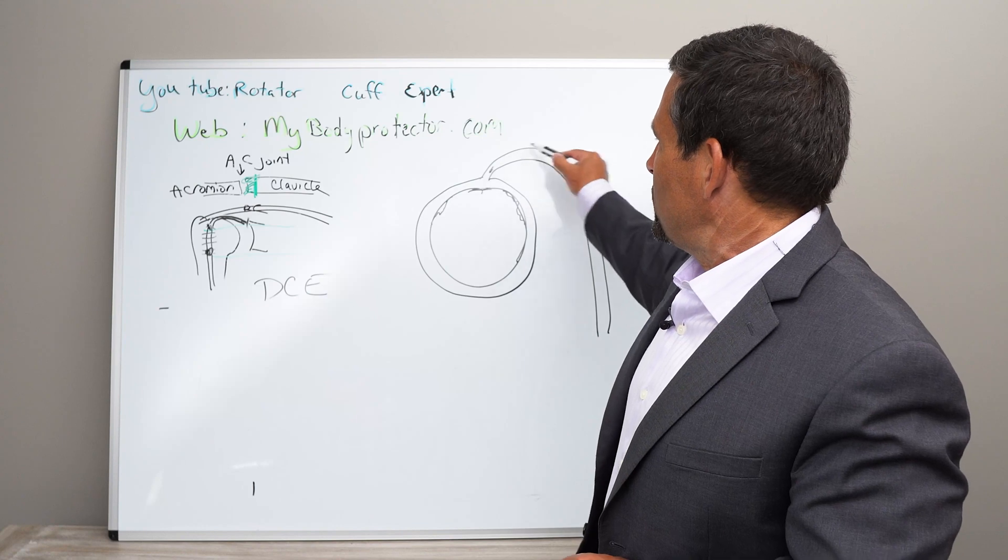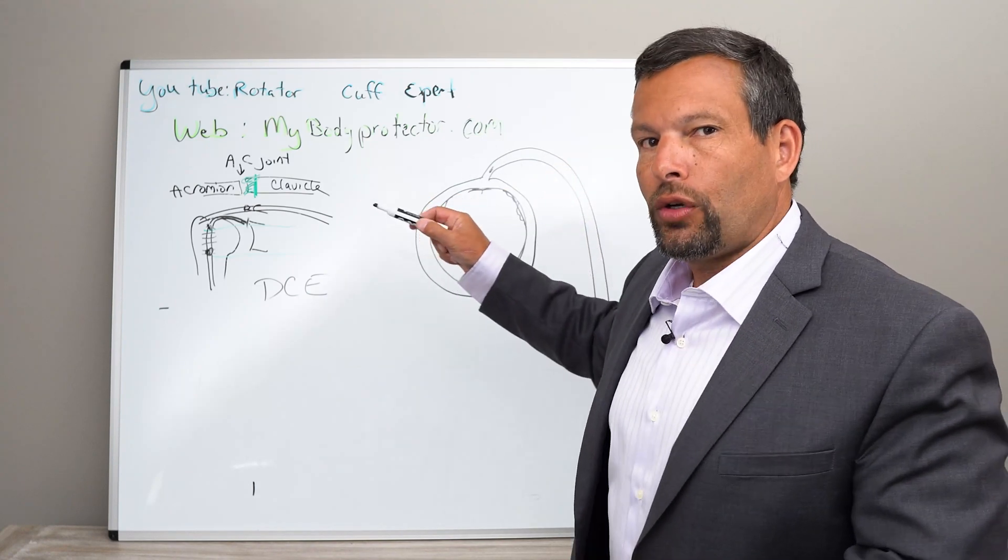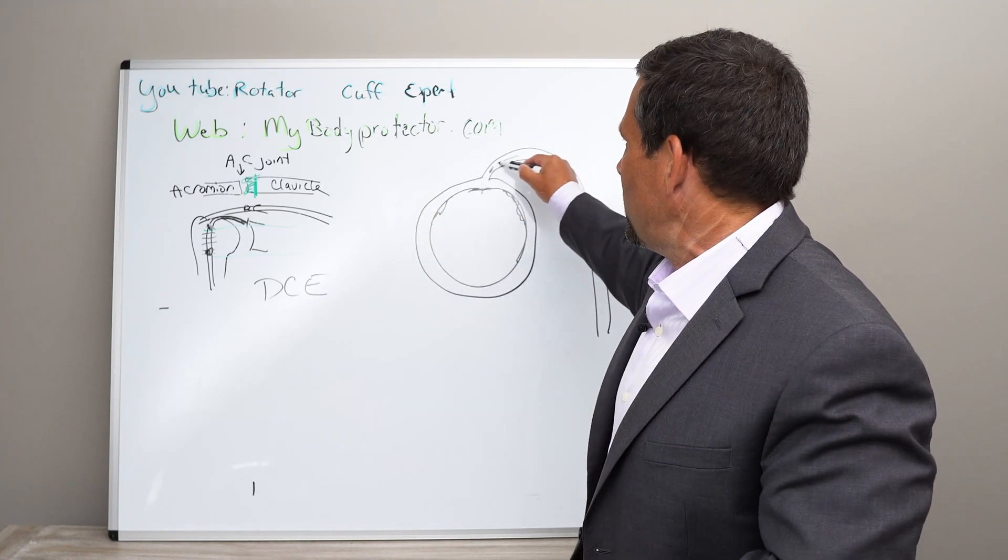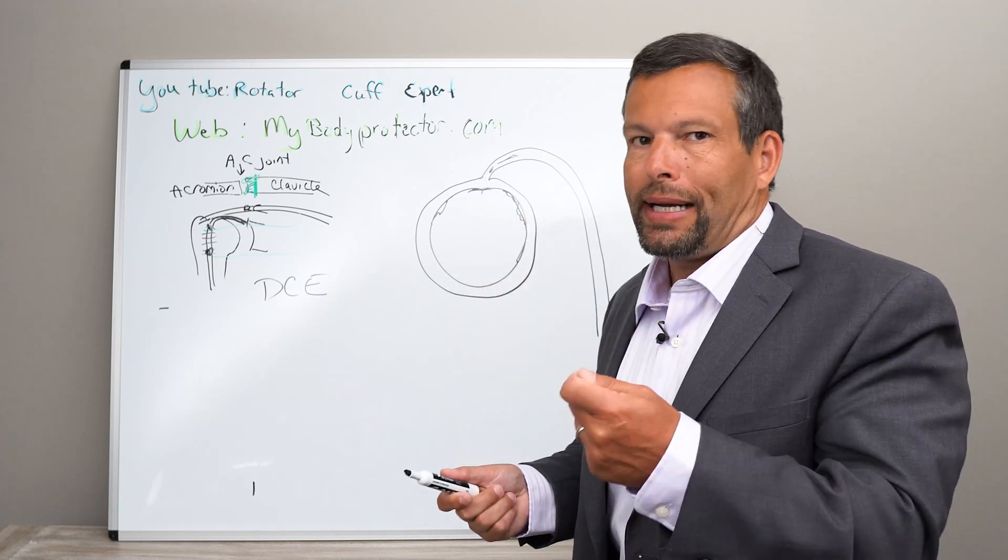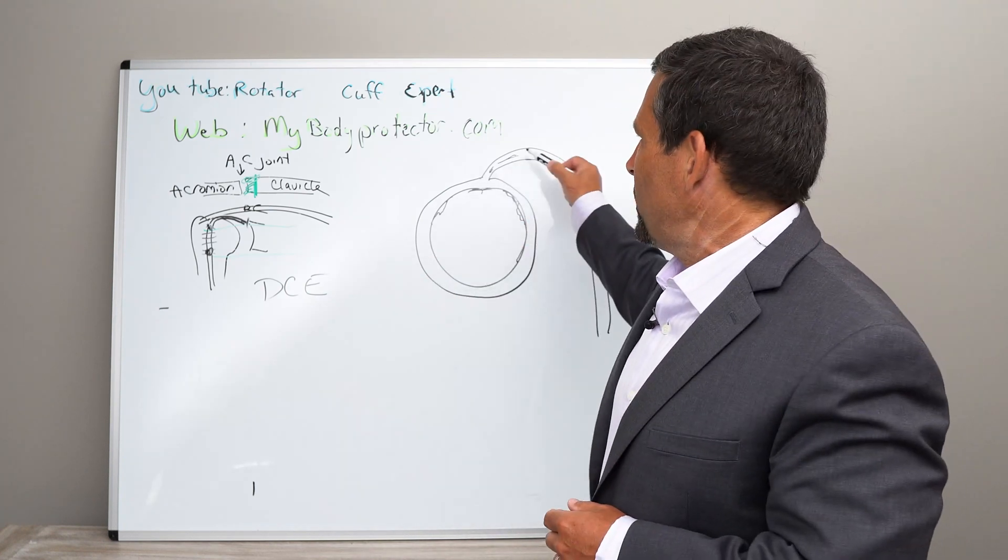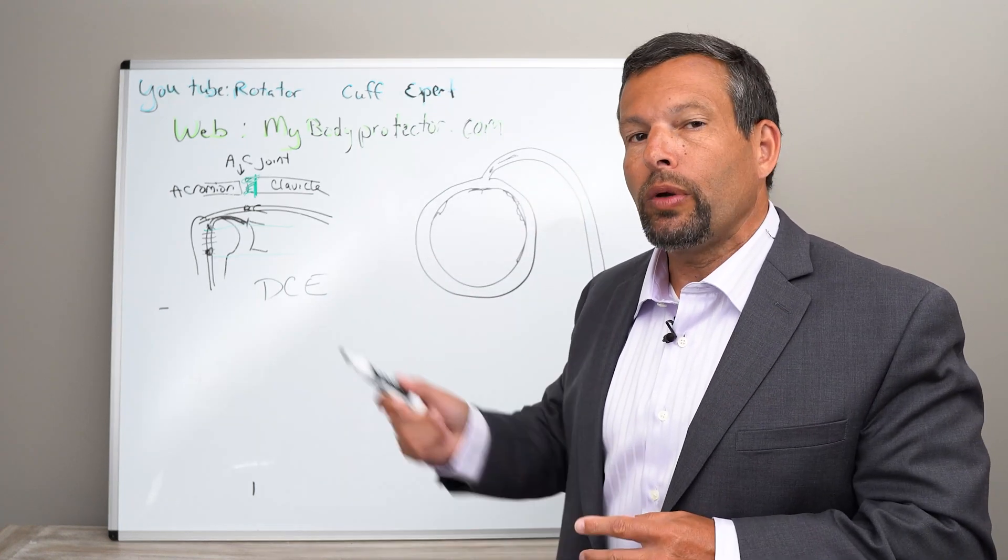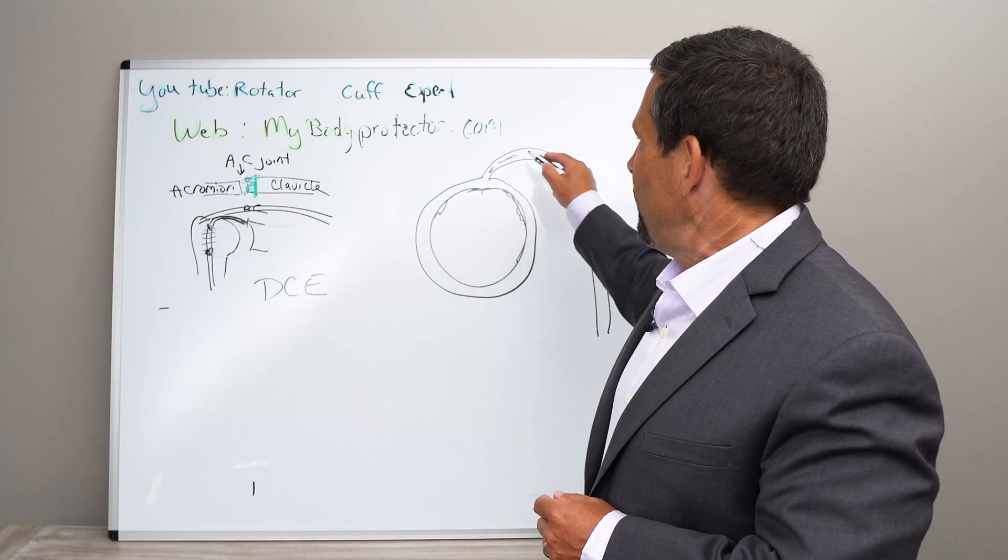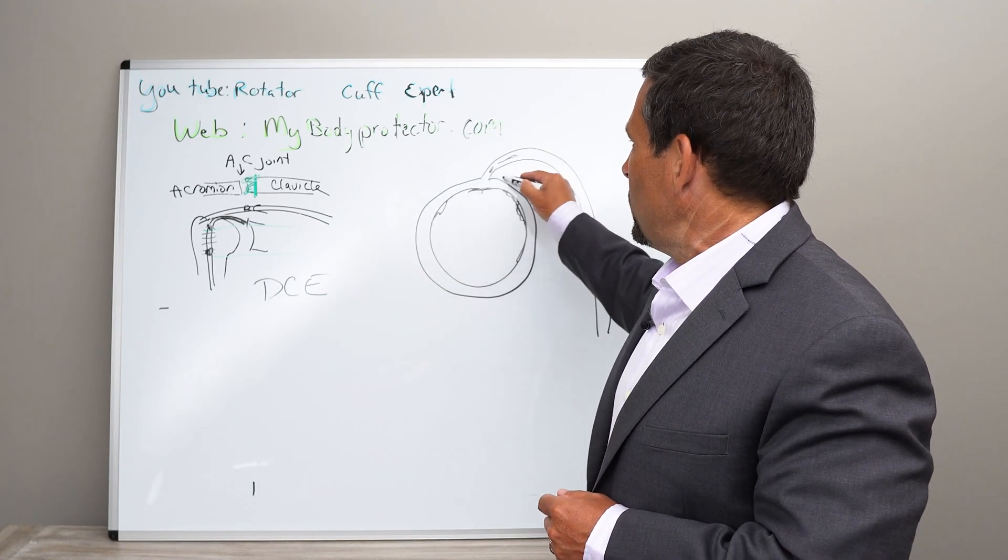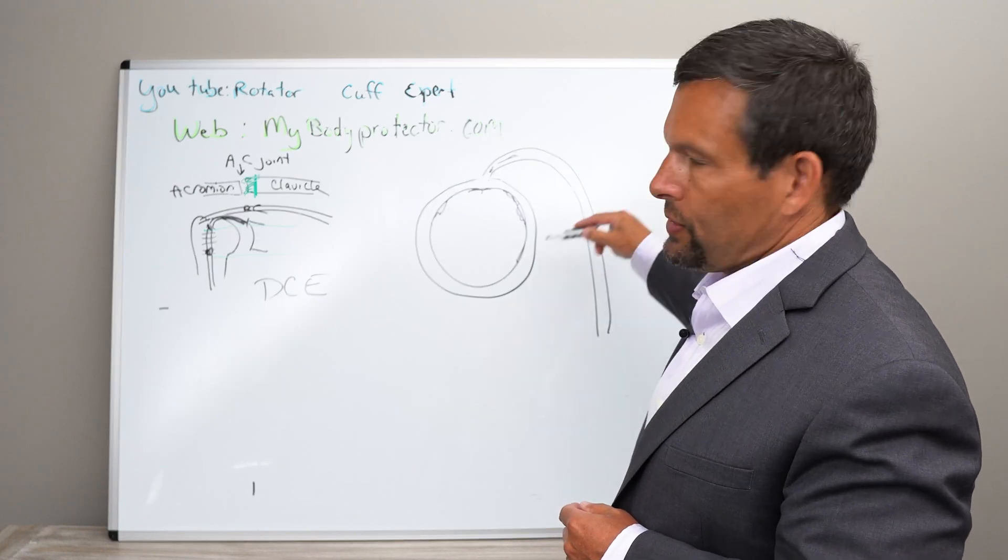So a few things that we need to know: if the biceps itself is damaged, then it's very difficult to fix the biceps tendon. If you have a tear like this, you can sew it back together, but there's not a very good healing potential. So typically we wouldn't do this. Typically, if it's really damaged here, we're going to release it and reattach it somewhere else.